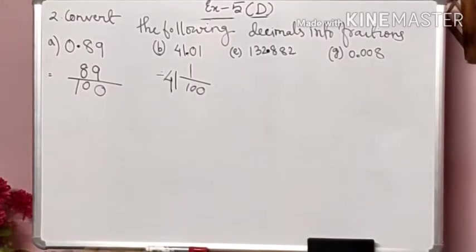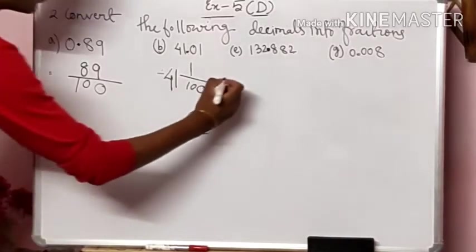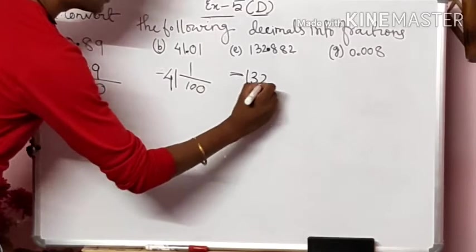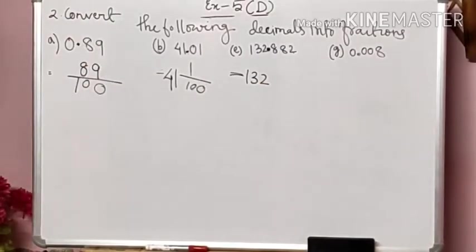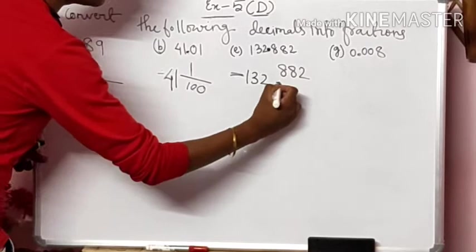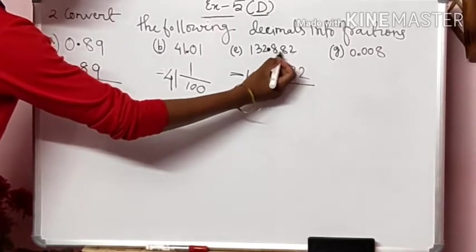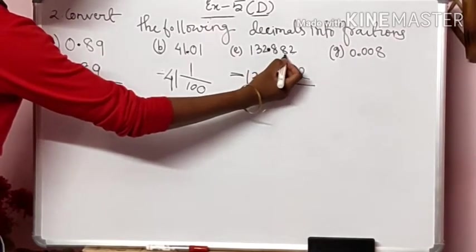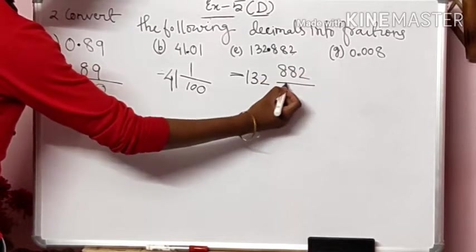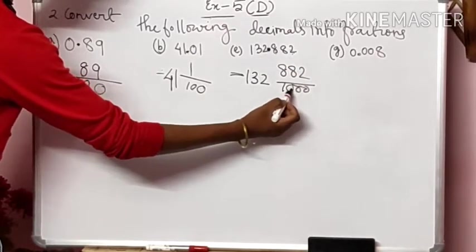Now we are going to do question number A again. You see that 132 is on the left-hand side of the decimal, so it will remain as 132. The decimal numbers are 0.882, so we just need to convert this. We write 882 directly, give a dividing bar, and there are 3 numbers after the decimal — 1, 2, 3 — so this is in the thousandths place. We have to give 1000, meaning 3 zeros. So it becomes 132 and 882 by 1000.